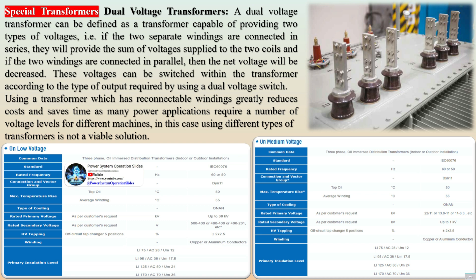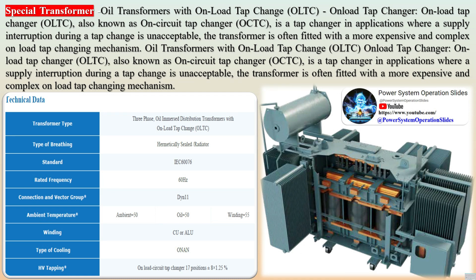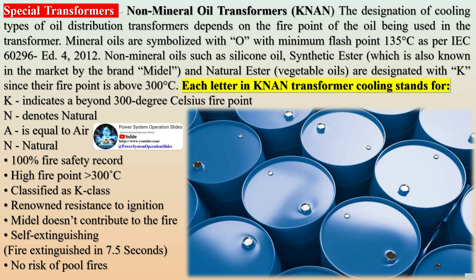Applications: The distribution transformer provides the final voltage transformation in the electric power distribution system, stepping down the network's medium voltage to low voltage — the level used by the consumer — and is considered one of the most important links in the distribution network. Distribution transformers are used in many applications. Transformer Classifications: A distribution or service transformer provides the final voltage transformation in the electric power distribution system, stepping down the voltage in distribution lines to the level used by the customer. Transformers can be classified based on many factors like installation or losses, which is the most important factor. In any electrical machine, loss can be defined as the difference between input power and output power.